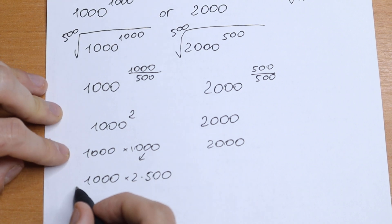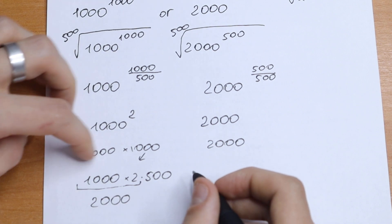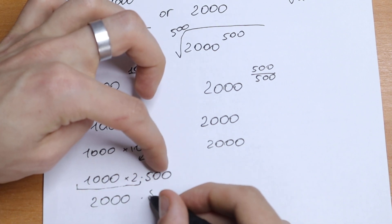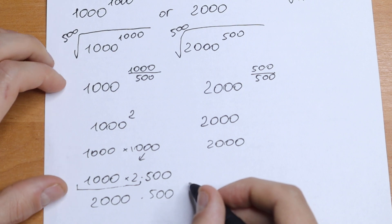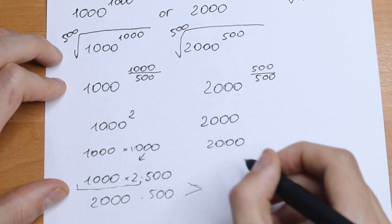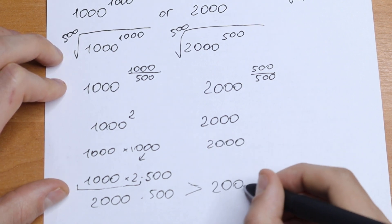And if we multiply this we will have our 2000. But still we need to multiply this by 500, and of course this will be greater than this 2000 on the right.